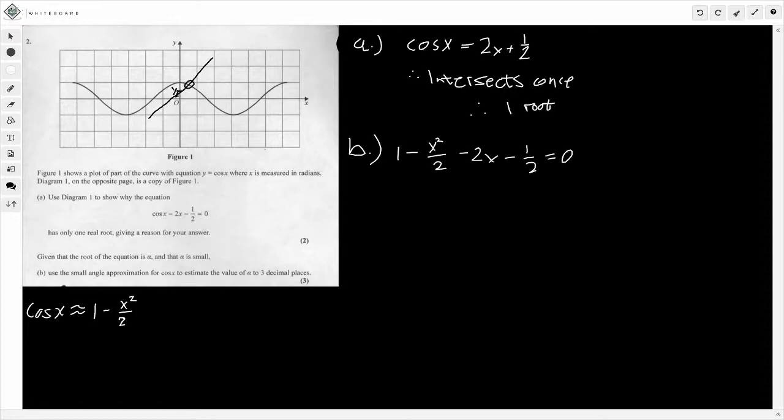So, notice we've got this x squared here, and it's divided by 2. We want to simplify this. And we also have a division of 2 on this side here with this minus 1 half. So, if we multiply everything through by 2, we're going to get integers. So, 1 times 2, that's 2. This will just become minus x squared. Minus 2x times 2, that's minus 4x. And then, finally, minus 1 half times 2 gives me minus 1. So, that's equal to 0.